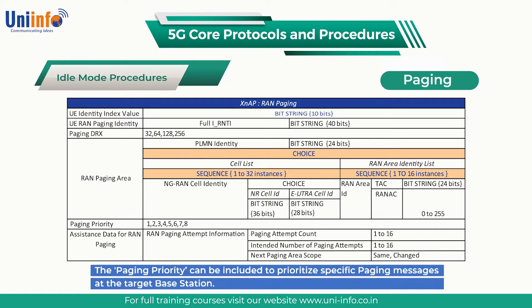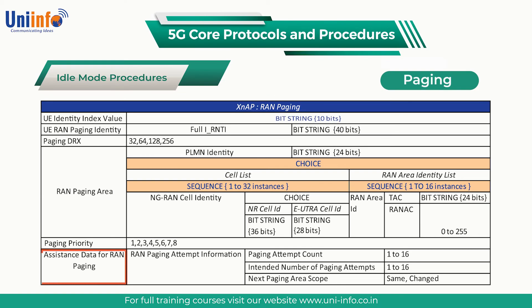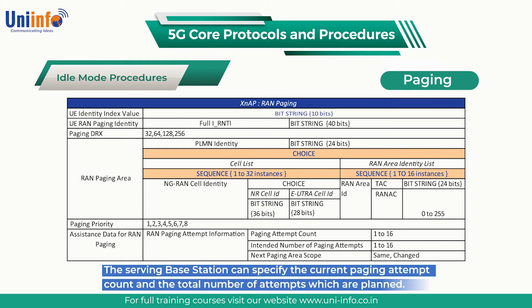If the paging procedure has been triggered by the reception of a downlink NAS message from the AMF, then a RAN paging priority may have been included within the NGAP downlink NAS transport message. The assistance data for RAN paging can be used to provide the target base station with information regarding the retransmission of XNAP RAN paging messages. The serving base station can specify the current paging attempt count and the total number of attempts which are planned, and can also specify whether or not it plans to change the scope of the geographic paging area on the next paging attempt.